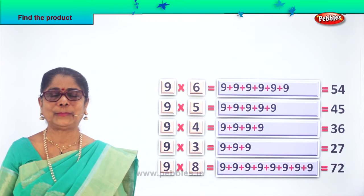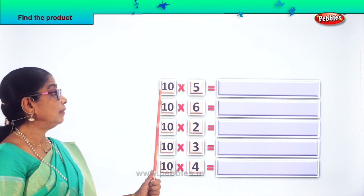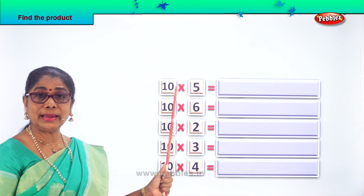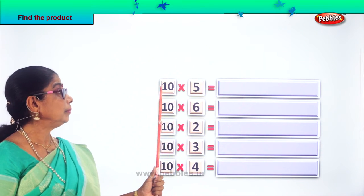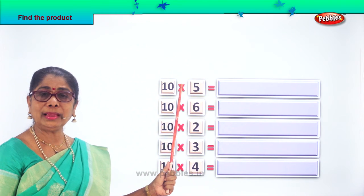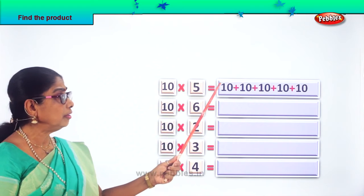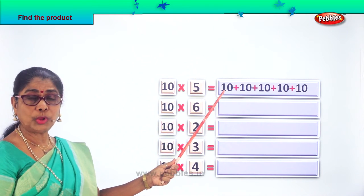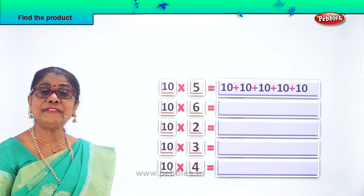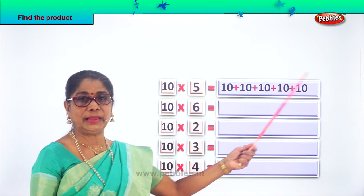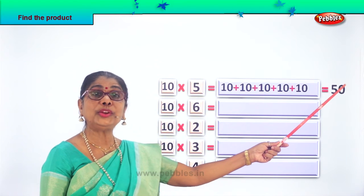Let's take another. Find the product of 10 into 5. What is 10 into 5? We are doing the repeated addition method. You write 10 five times: 1, 2, 3, 4, 5. What are 10 fives? 10 fives are equal to 50. Find the product of 10 into 5 — 10 fives are equal to 50.